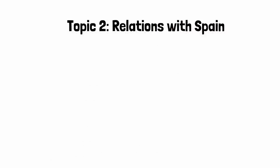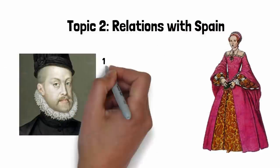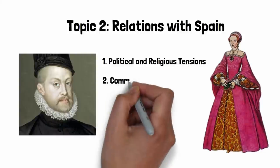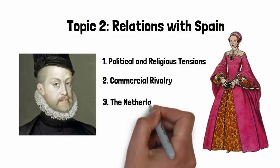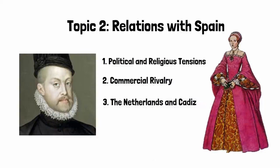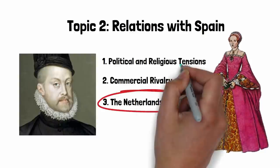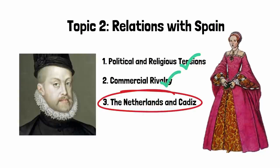We're still looking at the reasons there was an issue between England and Spain and the events that led up to the Spanish Armada. Today we're going to be looking at the final reason for the problems, which is the Netherlands and the events at Cadiz. If you've missed the previous videos you really need to go back and watch them now, as they will provide you with the background you need to understand why the Netherlands and the events at Cadiz happen.